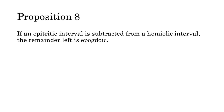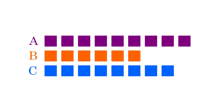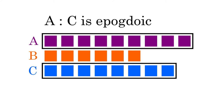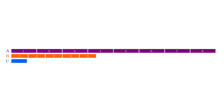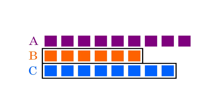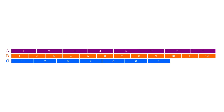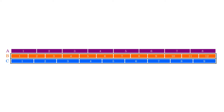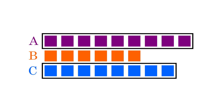If an epitritic interval is subtracted from a hemiolic interval, the remainder left is epigdoic. Let a be the hemiolic of b, and let c be the epitritic of b. I have illustrated this with 9, 6, and 8, but you can pick any three numbers that stand in this relation. This proposition asserts that a will be the epigdoic of c. Since a is the hemiolic of b, 8 a's are equal to 12 b's. Since c is the epitritic of b, 9 c's are equal to 12 b's. If 12 b's equal 8 a's, and 12 b's also equal 9 c's, then 9 c's are equal to 8 a's. Therefore a is equal to c plus an eighth of c, which means a is the epigdoic of c.